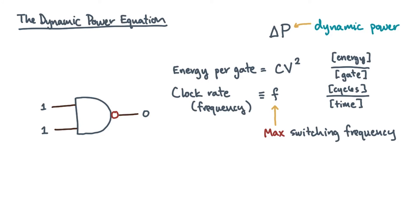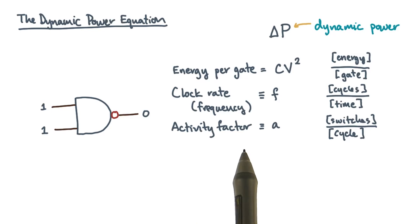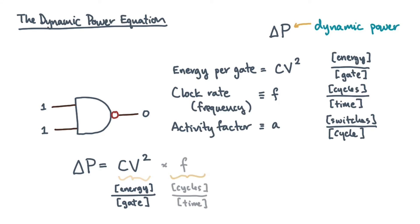Now the gate doesn't necessarily switch on every cycle. Depending on what the computation is doing, the switches might happen only once every few cycles. That brings us to the second factor, which is the activity factor. It's the number of switches per cycle. If you think about how a clock works, it has a maximum value of 1. In general, it will depend on what the computation is doing. Taken together, these parameters tell us how to compute dynamic power. It's basically the energy per gate, or CV squared, times the switching frequency, which is A times F.